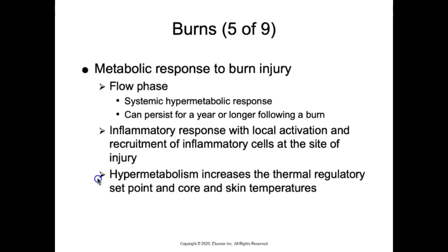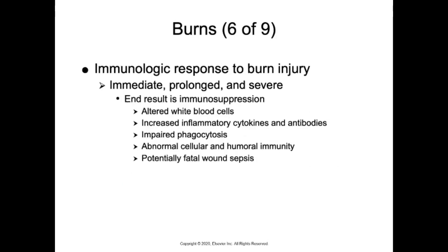The immunological response to major burns is immediate, prolonged, and severe. The individual who survives burn shock is immunosuppressed and has an increased susceptibility to potentially fatal systemic burn wound sepsis. This is due to altered white blood cells that cannot defend the body, increased inflammatory cytokines and antibodies, impaired phagocytosis, abnormal cellular and humoral immunity, and potentially fatal wound sepsis.